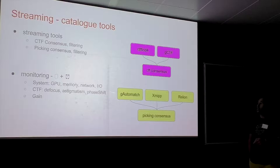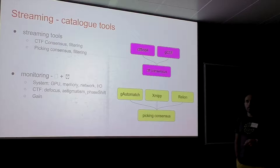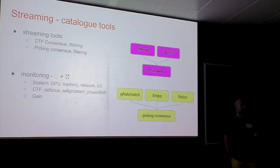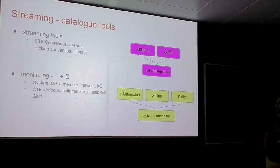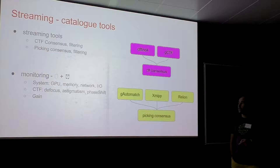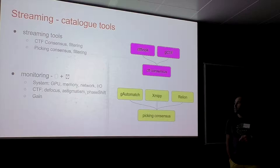Monitoring is also built into Scipio. Monitors are processes that check how things are going during your acquisition or workflow. There are three main monitors. One is the system monitor: it monitors GPU, CPU temperature, memory, network activity, and hard drive activity. You can also monitor CTF — focus, astigmatism, and phase shift. The monitors have built-in alerting: you configure the email settings, and the monitor sends you an email when values go above or below thresholds you specify.